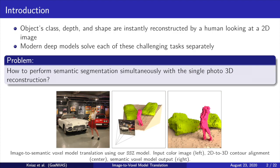Object class, depth and shape are instantly reconstructed by a human looking at a 2D image. While modern deep models solve each of these challenging tasks separately, they struggle to perform simultaneous scene 3D reconstruction and segmentation. In this paper, we would like to find out how to perform semantic segmentation simultaneously with single photo 3D reconstruction.